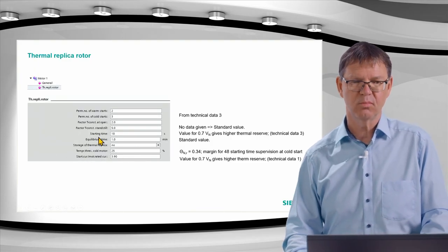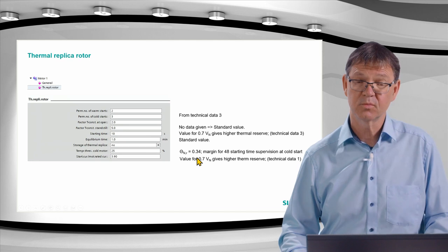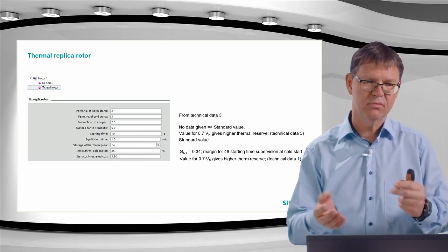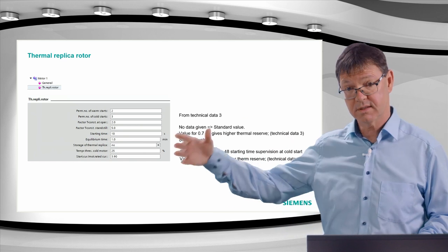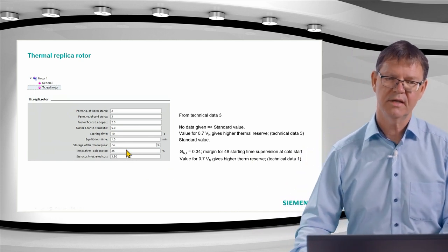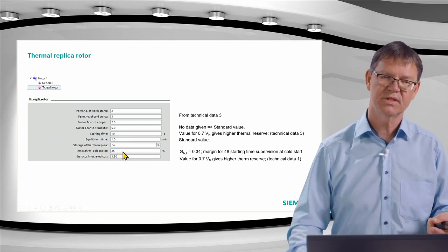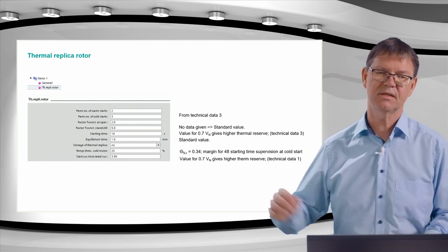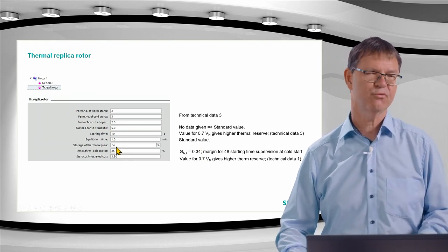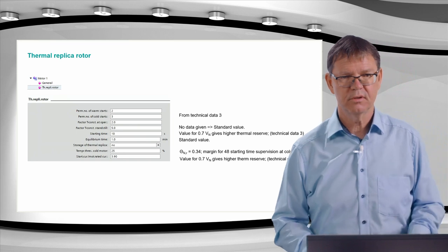For the rotor thermal replica: the starting current ratio is set to 3.9 IN (reduced voltage case) with the corresponding starting time — the more severe case for the rotor, fully utilizing the allowed thermal capacity. The cold motor threshold is set to a compromise value between 0% and 34%, where 34% corresponds to three cold starts. Using 0% would always apply the warm starting time; using 34% would switch to cold time just below that value.